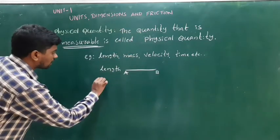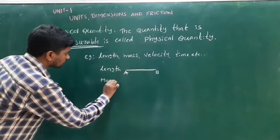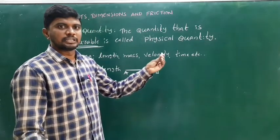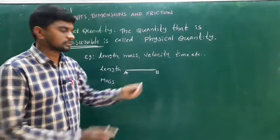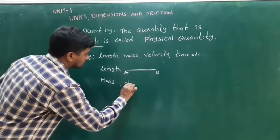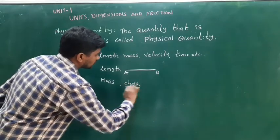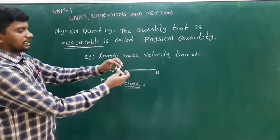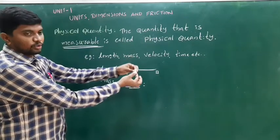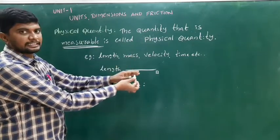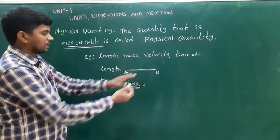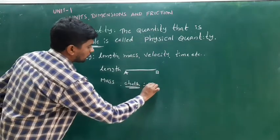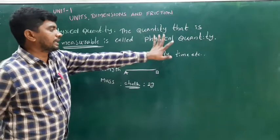Next one is mass. For example, the quantity of a chalk piece is two grams. The chalk's quantity — two grams, five grams, one kg — is measurable. The chalk piece weighing two grams is measurable, so it is called a physical quantity.